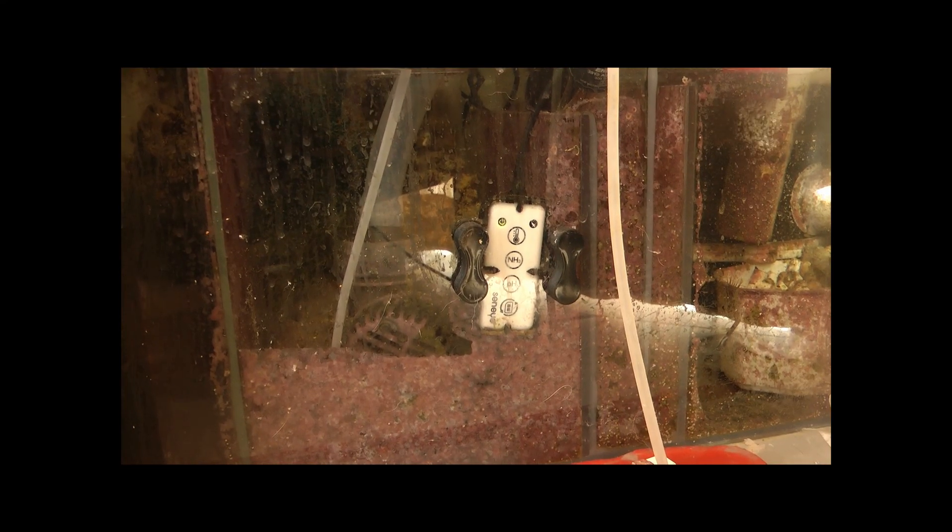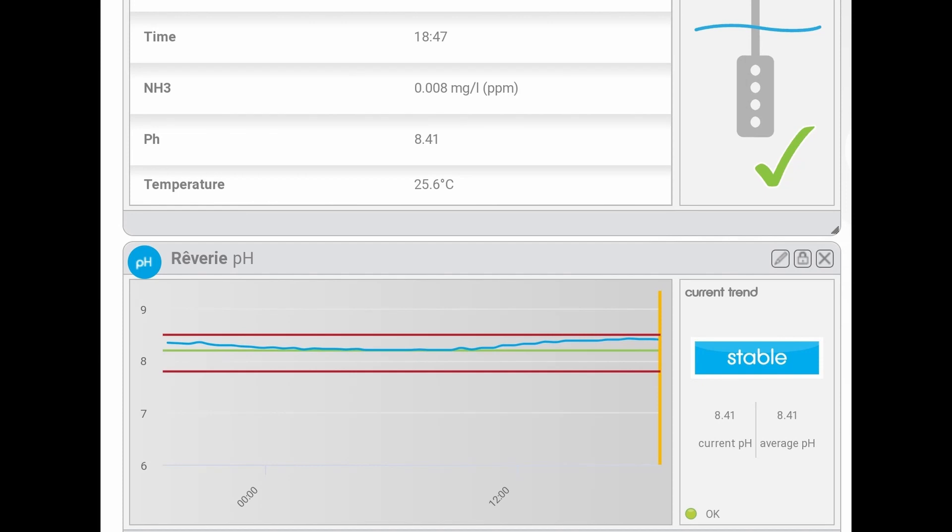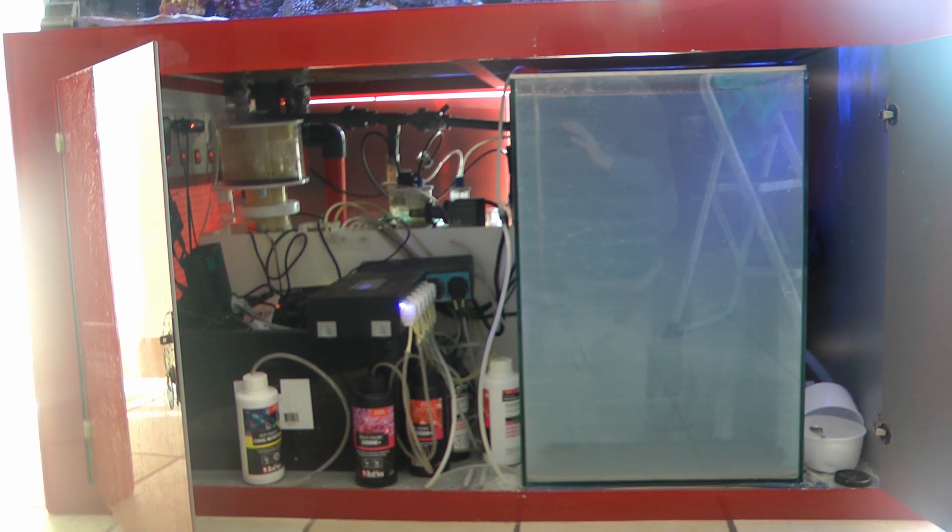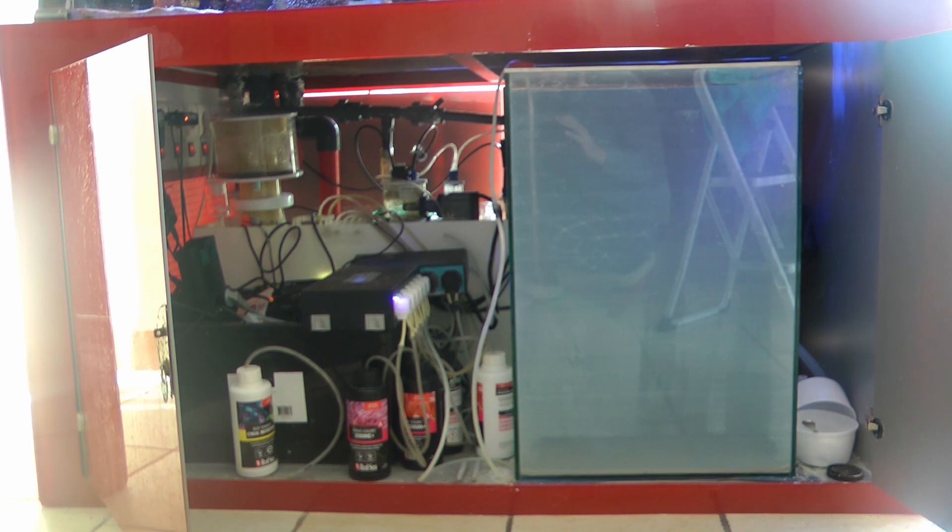I have a Seneye monitor, and it monitors pH in the tank. The pH is pretty stable and high throughout the day. I achieve this in two ways. I use kalkwasser in the RO water to start with, and it's being dosed 24 times per day.